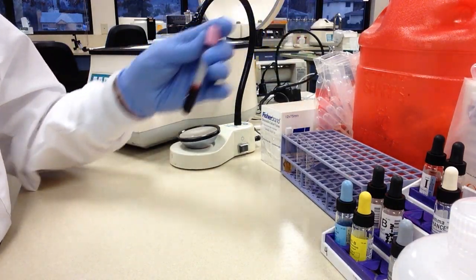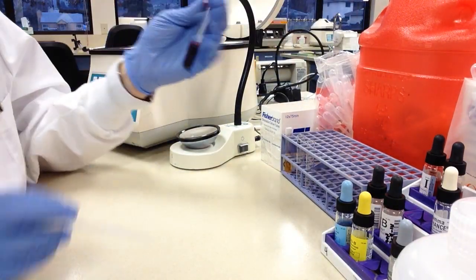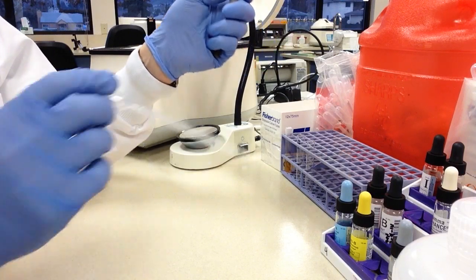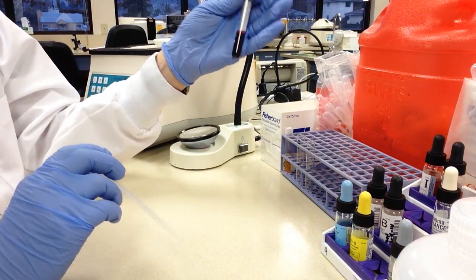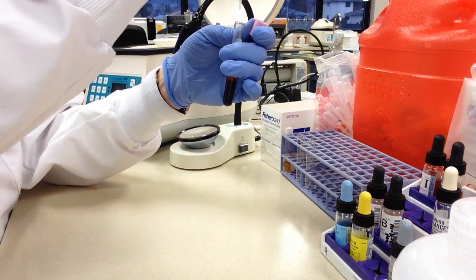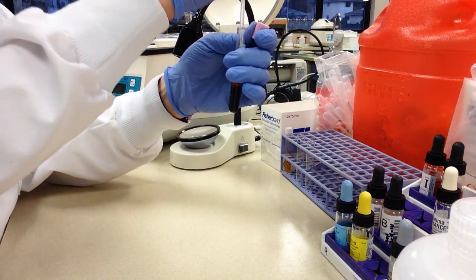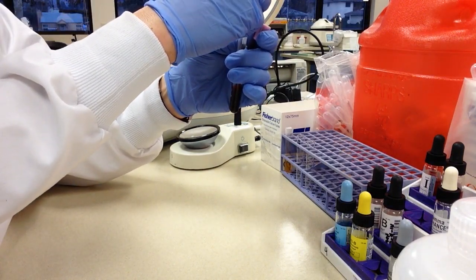Alright so from our EDTA tube we're going to have to draw a little bit of those cells out on the bottom. So just take a disposable blood bank tube and there's no exact amount we need to measure just suck a little bit up. We're going to need about 3 drops.